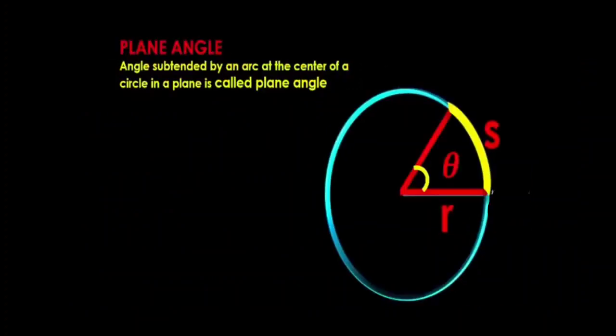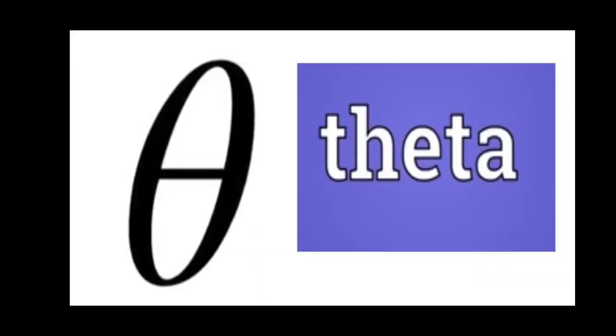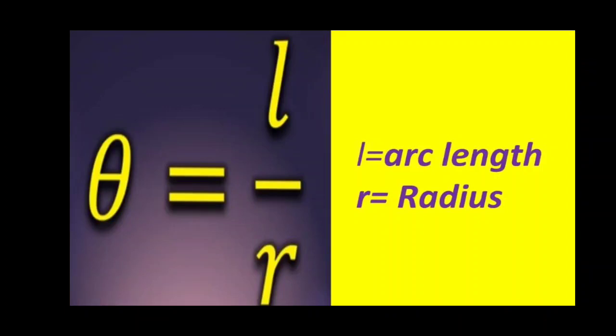The angle subtended by an arc at the center of a circle in a plane is called a plane angle. It is denoted by the Greek alphabet theta. Theta is given by the formula theta equals L by R, that is the ratio of arc length to radius.